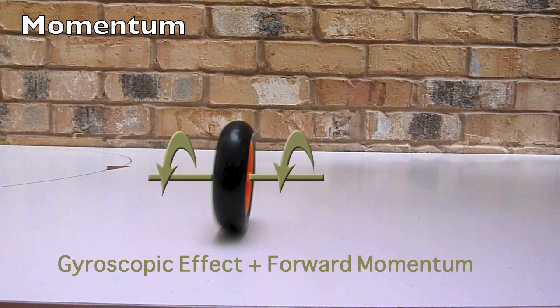Another concept we need to introduce is momentum. A rolling wheel has both forward and angular momentum, which means it will try to keep rolling at its current speed and angle of lean unless forced to change. This is what keeps a moving bike upright.